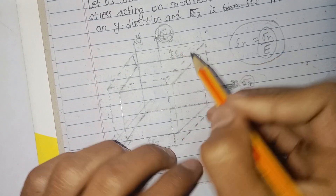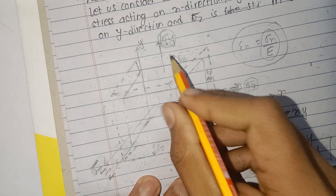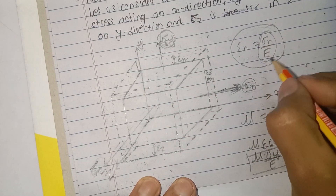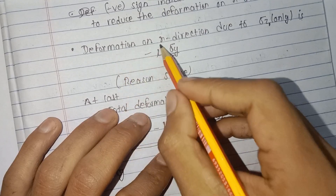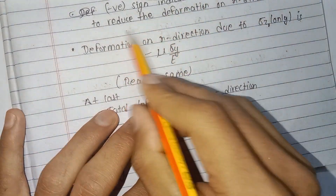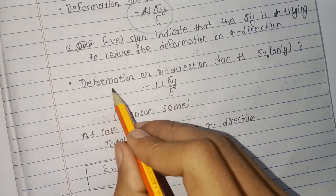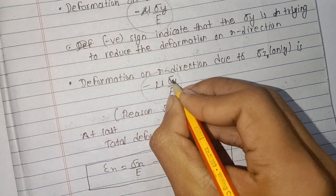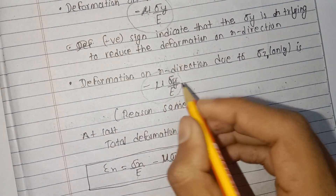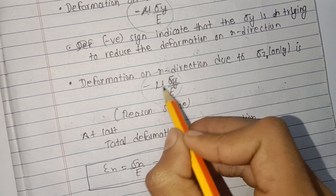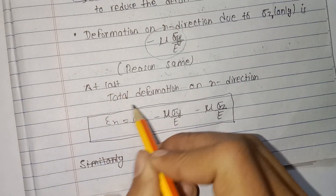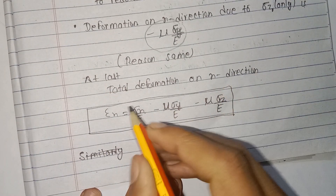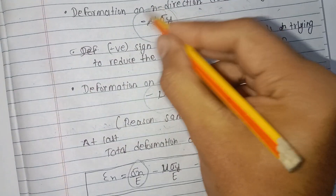Sigma y tends to reduce the deformation in the x-direction — that is why the sign is negative. Similarly, the deformation in the x-direction due to sigma z is also negative. The negative sign indicates that sigma y and sigma z are trying to reduce the deformation in the x-direction.